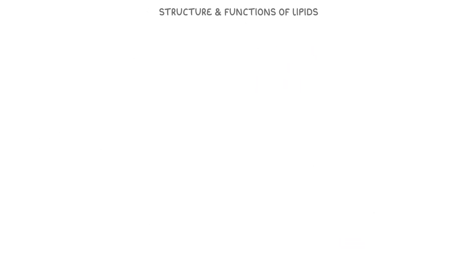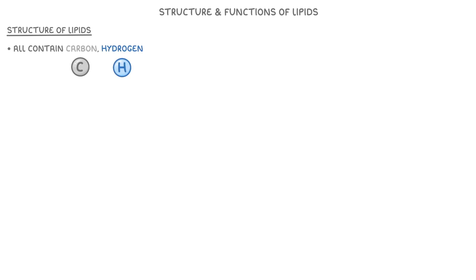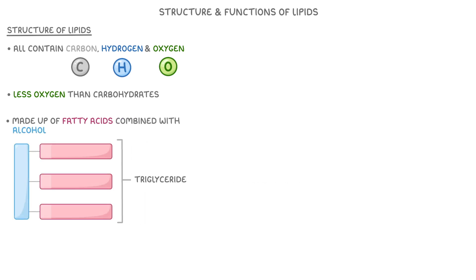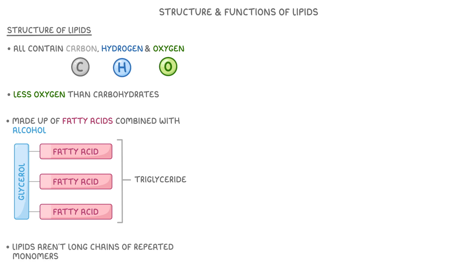Let's begin by looking at the structure and functions of lipids. They're an important group of molecules that all contain carbon, hydrogen and oxygen, but it's worth noting that they have much less oxygen than carbohydrates do. Most lipids are made up of fatty acids combined with an alcohol. For instance, this triglyceride is a lipid that contains three fatty acid tails linked to the alcohol glycerol. But some lipids have other structures and even have extra elements too. Remember that lipids aren't long chains of repeated monomers, so they aren't technically polymers.